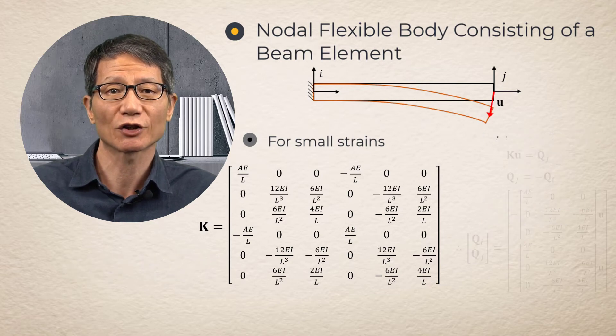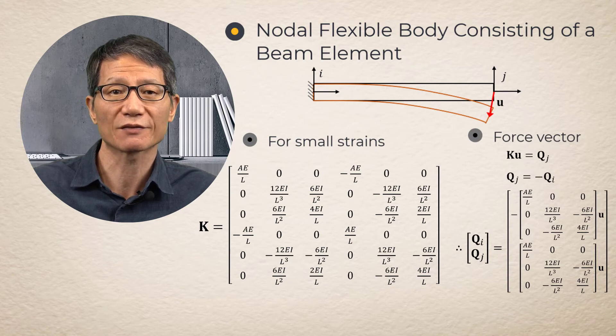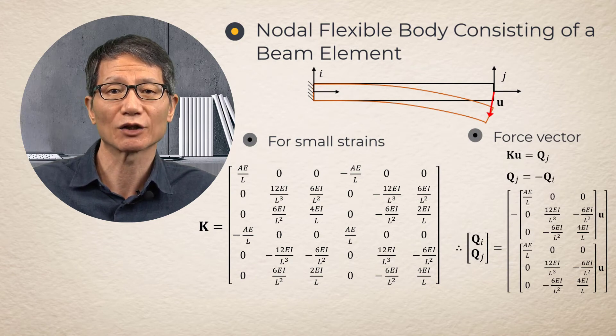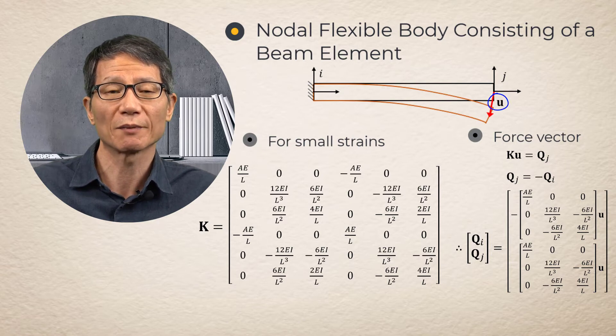The action and reaction generalized forces for the beam element are given by this force vector. The vector U is the relative deformation of one node with respect to the other node of the beam element.